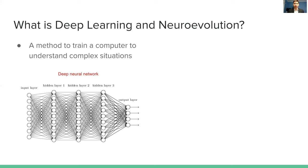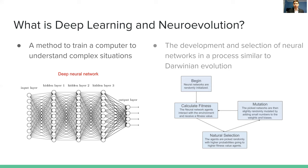Deep learning is a method to train computers to understand complex situations such as an intersection. It uses a network of computations with weights and biases that takes an input layer as a vector and returns an output layer as a vector, with hidden layers that provide the complexity. Neural evolution is the development and selection of these neural networks to optimize certain variables, using a process similar to Darwinian evolution — survival of the fittest — where random mutations cause desirable traits to emerge in the population.